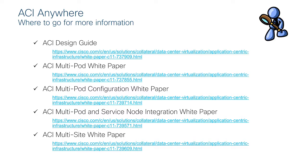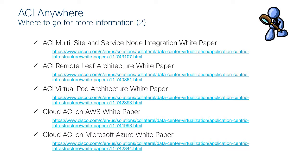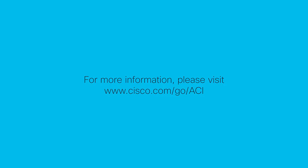You can find many collaterals with more information on deploying each component of the ACI Anywhere story, from a generic ACI design guide to Multipod and Multisite papers, Remote Leaf, Virtual Pod, and public cloud integration documents. We are now ready to move to the second module of the ACI Multisite Training, covering deployment considerations for the inter-site network that interconnects the different ACI fabrics.